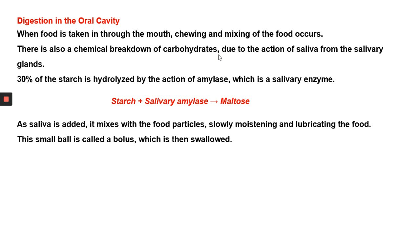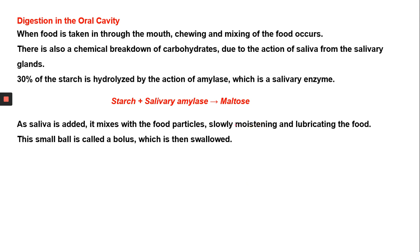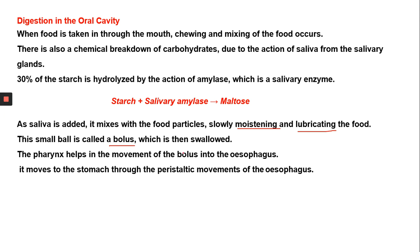Saliva is added, it mixes with the food particles and moistens the food. The most important reason saliva is added is that it moistens and lubricates the food, which helps it to be swallowed. When moistening happens, the food transforms into a bolus-like structure which can be easily swallowed. Next, the food goes into a muscular tube which is the junction between the food pipe and the windpipe.